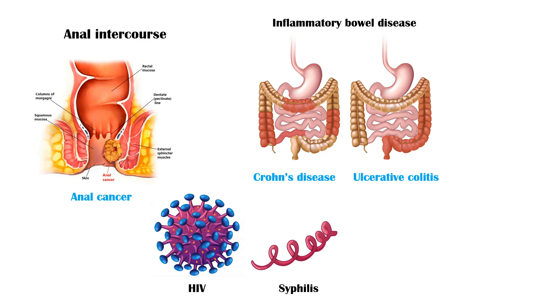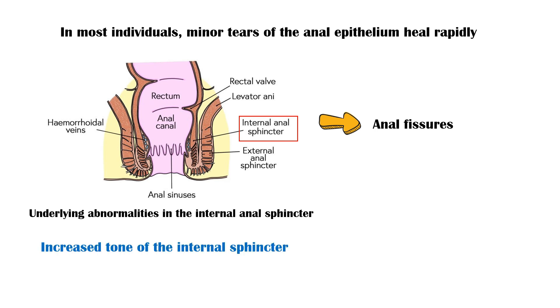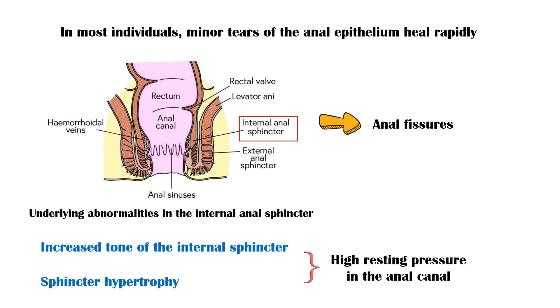In most individuals, minor tears in the anal epithelium heal rapidly without any residual damage. However, people who have underlying abnormalities in the internal anal sphincter tend to develop acute and chronic anal fissures. The two most common abnormalities include increased tone of the internal sphincter and sphincter hypertrophy, both of which lead to high resting pressure in the anal canal, predisposing to fissures.